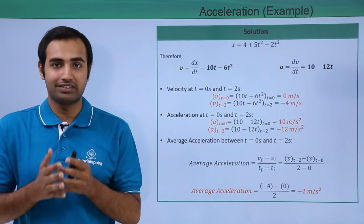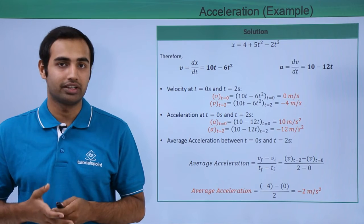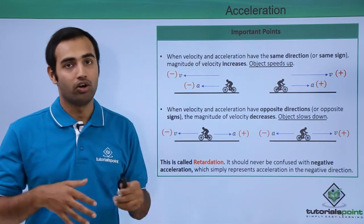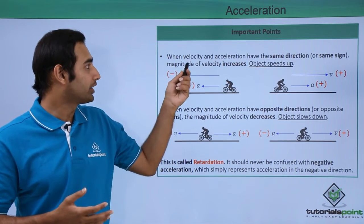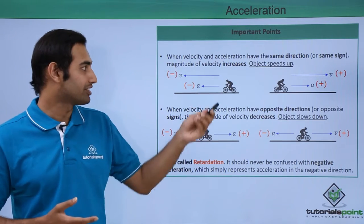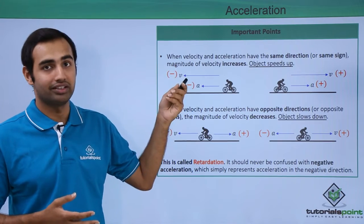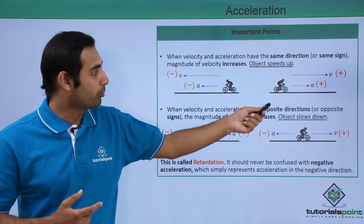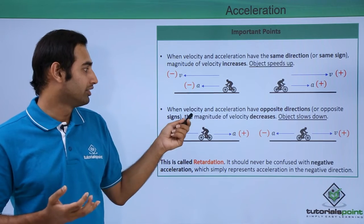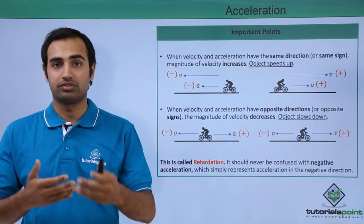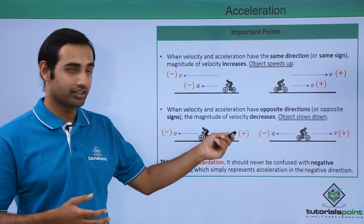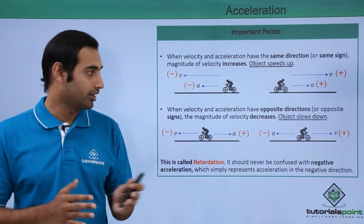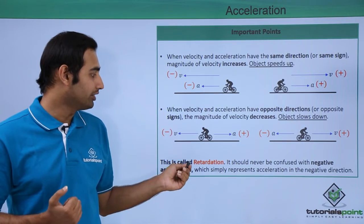Now let's talk about some interesting things that surface when velocity and acceleration are acting simultaneously on a body. When velocity and acceleration have the same direction — meaning they also have the same sign — the magnitude of velocity increases, meaning the object speeds up. So if a cyclist has velocity and acceleration both pointing in the negative direction, the speed will increase. However, when velocity and acceleration have opposite directions or opposite signs, the magnitude of velocity decreases and the object tends to slow down. This phenomena of slowing down because of acceleration is called retardation.